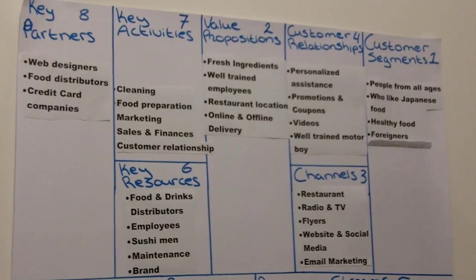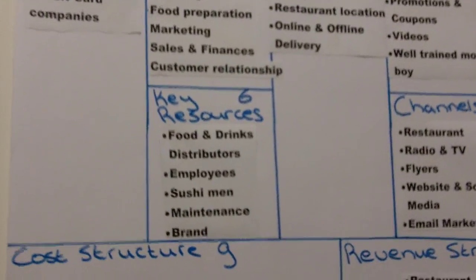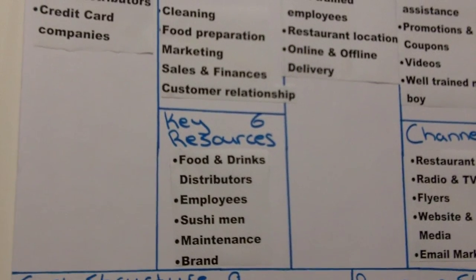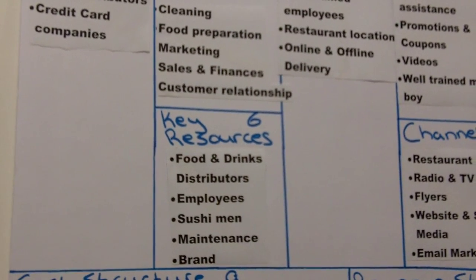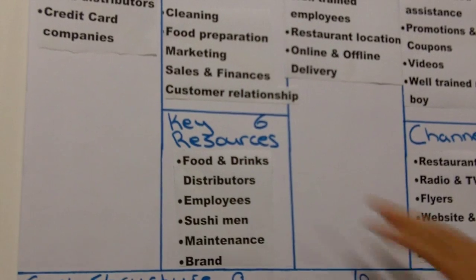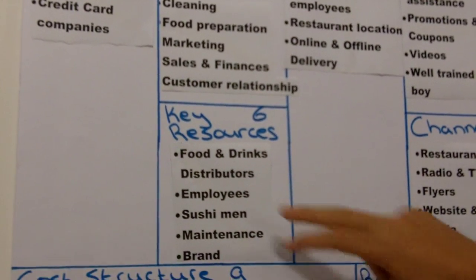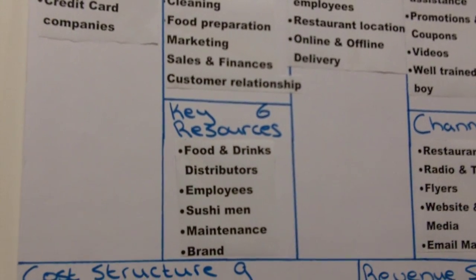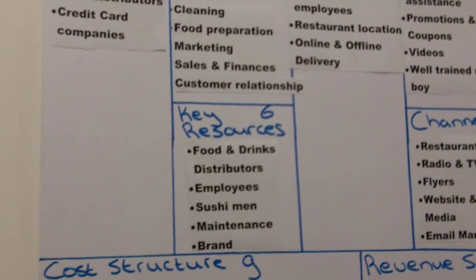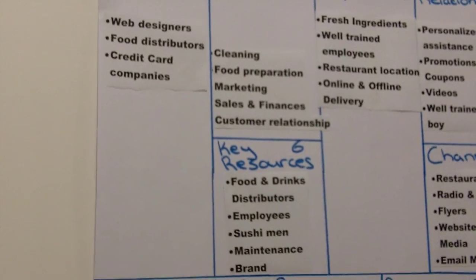The sixth building block is key resources. Key resources are basically the assets your company needs in order to do what it does best. For our restaurant, we need food and drinks distributors, employees, the sushi chef, maintenance, and our brand. Once you have that clear, you're ready to move on.